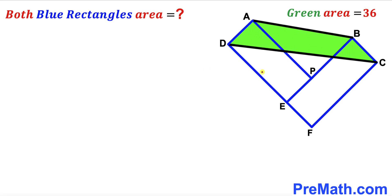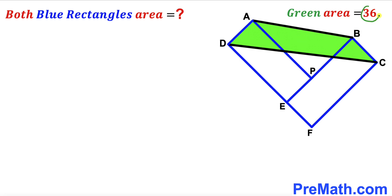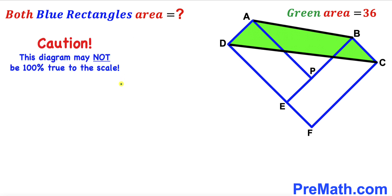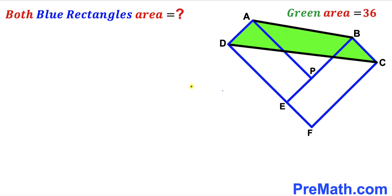Welcome to pre-math. In this video we have got two blue congruent rectangles put together, as you can see in the diagram. As a result we ended up with this green shaded quadrilateral ABCD, and the area of this green shaded quadrilateral has been given to us as 36 square units. Our task is to calculate the area of both of these rectangles combined. Please keep in mind that this figure may not be 100% true to scale.